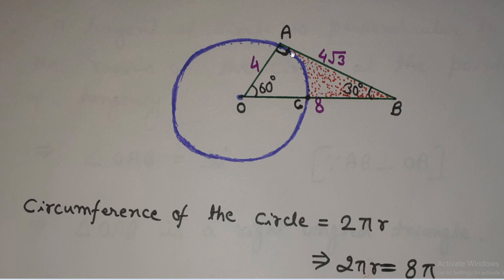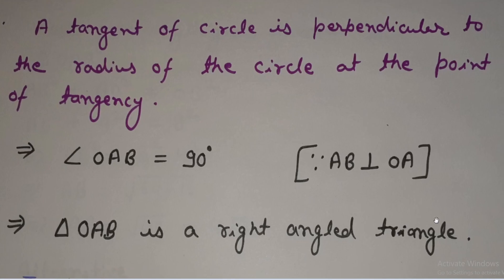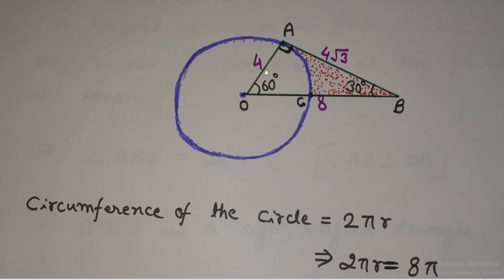Now I will show you one important theorem of a circle related to its tangent. This is the circle in blue color and AB is a tangent to the circle at point A, so A is the point of tangency. If I join the point of tangency to the center, then this radius is perpendicular to the tangent. This is an important theorem of the circle: a tangent of a circle is perpendicular to the radius at the point of tangency. So OA is perpendicular to AB, meaning angle OAB is a right angle, and triangle OAB is a right-angled triangle.